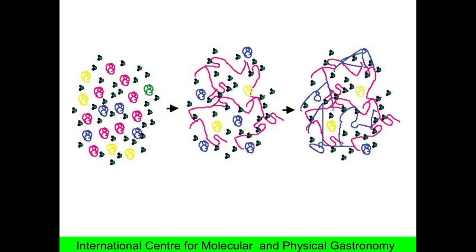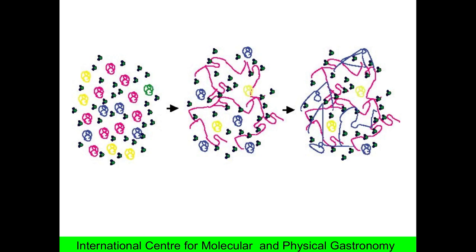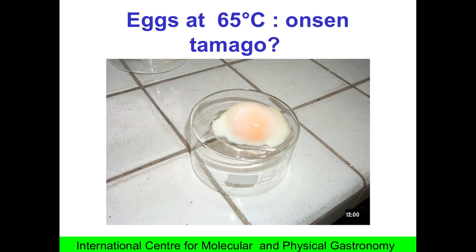How could we validate this theory? Very easily, because we have the denaturation temperatures of various proteins, and we can predict that if we stop between the first and the second coagulation, then we will be able to have a fixed result. And this is what I did. I remember very well the experiment. I decided to cook at 65 Celsius degrees. And here is the result.